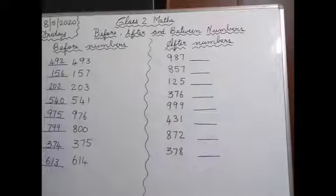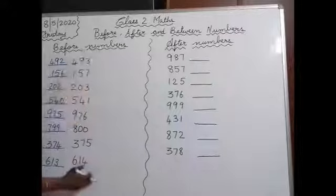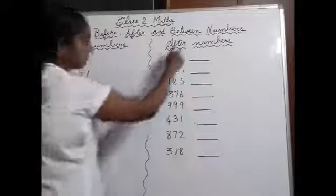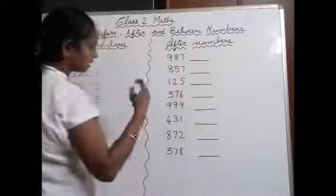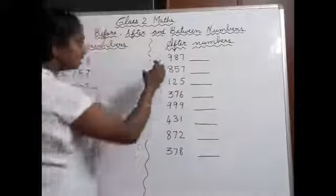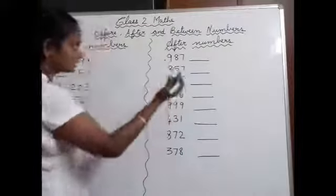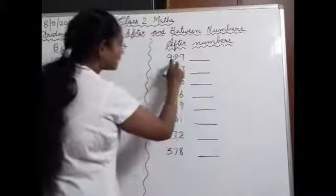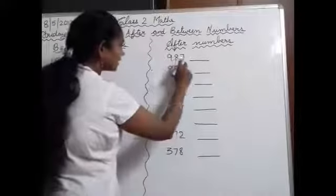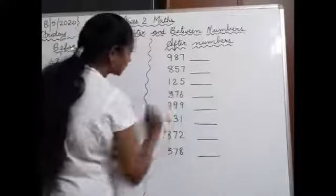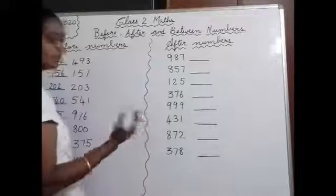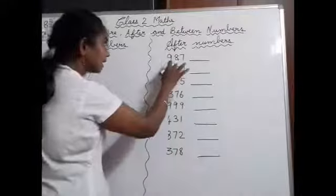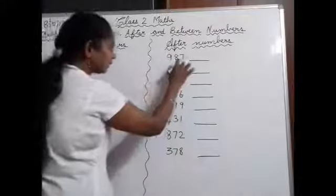So we learnt before numbers. Now we are going to learn after numbers. After number means the number which comes after a given number. So, 987 blank — after 987, which number comes? Start saying from 981.